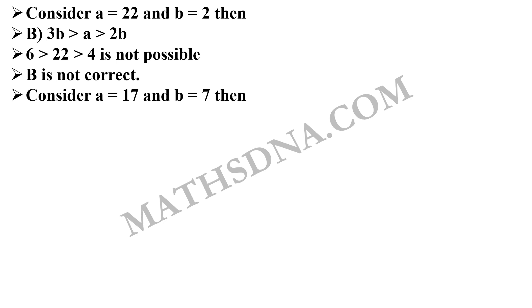Now, consider a equals 17 and b equals 7. Then, for option C, that is a is greater than 3b, that is 17 greater than 21, which is also not possible. So, option C is also not correct.